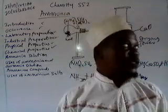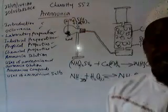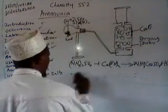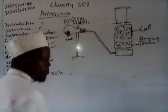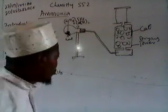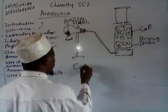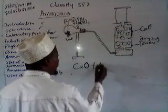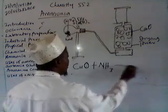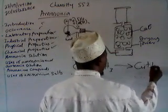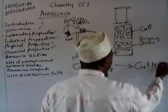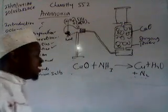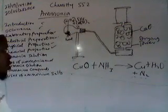Apart from that, ammonia also reacts with copper(II) oxide to deposit copper. In the presence of ammonia, copper(II) oxide is reduced and copper is deposited. This is one of the methods of preparing nitrogen in the laboratory.